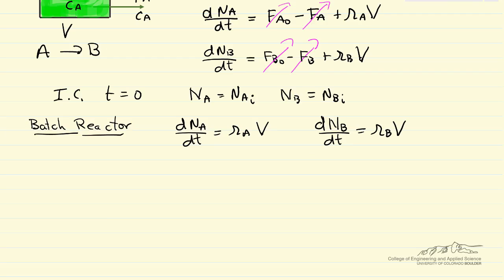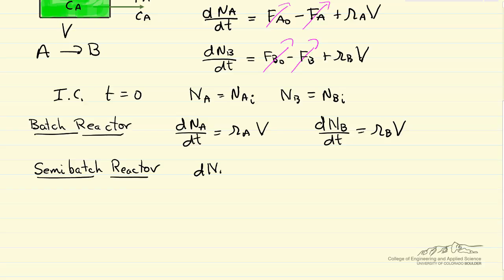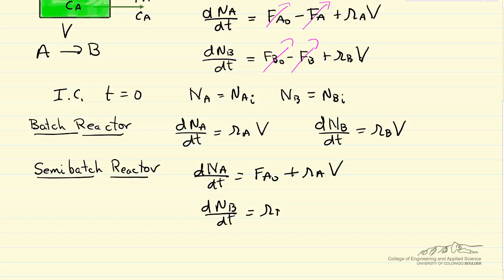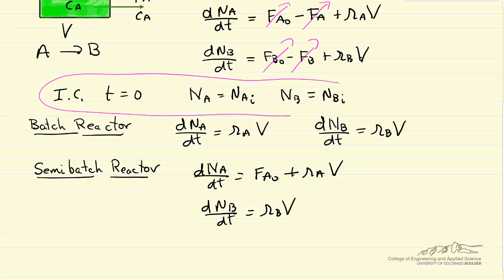Now let's look at a semi-batch reactor. There are different forms it might take, but we start with the same equations. One form is where we're feeding in one of the components — say we're feeding in A — but nothing is leaving the reactor, and we're controlling the rate of reaction by how fast we feed in A. The mass balance for A then includes a flow rate in but no flow rate out, while the mass balance for B looks like the batch reactor mass balance. For both batch and semi-batch, we still need initial conditions: how many moles of A and B are in the reactor at time equals zero.